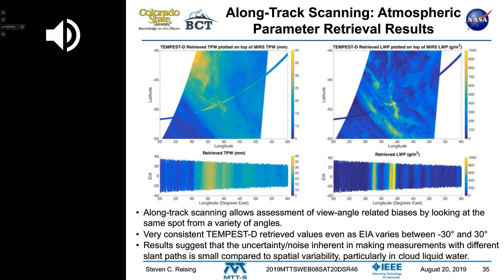Here's the Tempest D along-track scan shown against the NOAA prediction product background. The lower two plots show — as a function of Earth incidence angle on the vertical axis versus along-track position on the horizontal axis — very good consistency in humidity retrievals on the left and cloud water retrievals on the right.